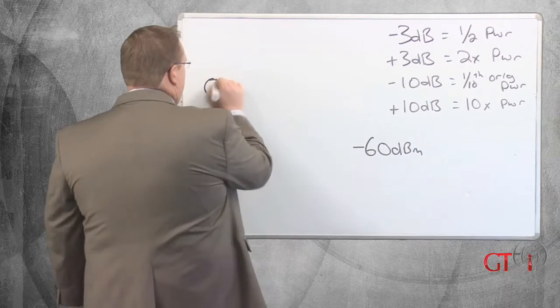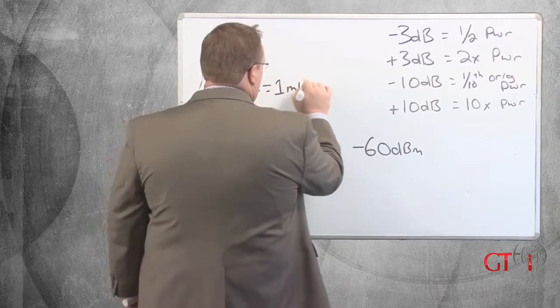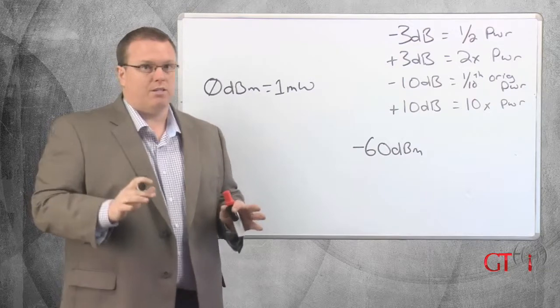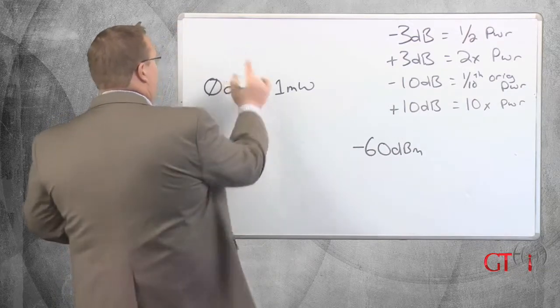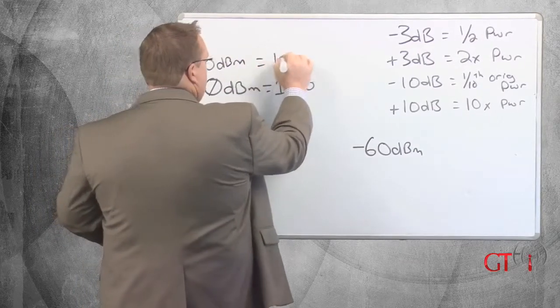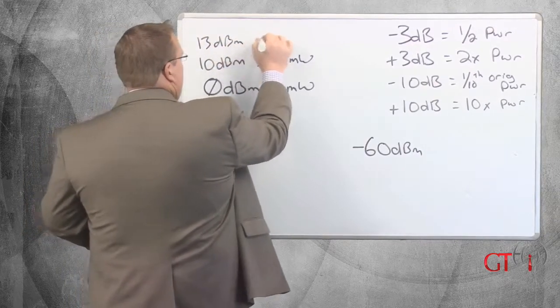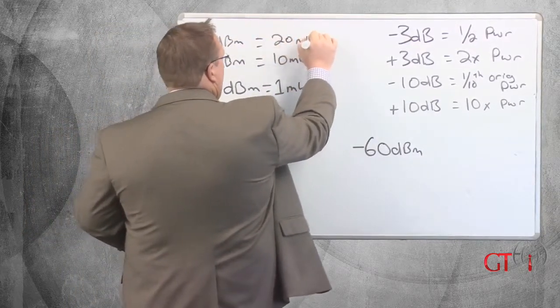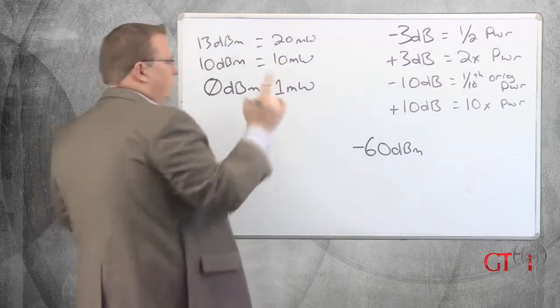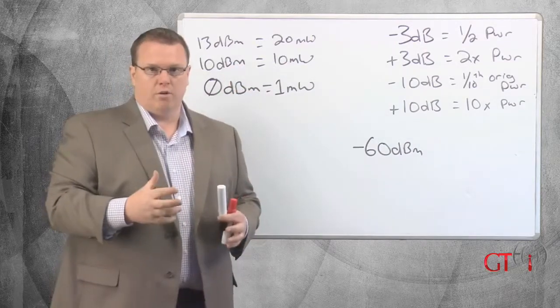On the last video, we started with this. 0 dBm equals 1 milliwatt. And that hasn't changed. Remember, that's an absolute. If we move our way up, 10 dBm equals 10 milliwatts. And we could say 13 dBm equals 20 milliwatts because we're following these rules. Plus 10, plus 3. We follow the rules, and it gets us to our positive dBm to milliwatt conversions.